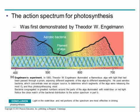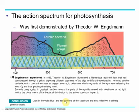The bacteria liked the oxygen being produced by the algae from photosynthesis. So where there's more oxygen, the bacteria grew better. The aerobic bacteria grew very well in some regions and very poorly in others. The violet-blue and the red portions of the spectrum were most effective at driving photosynthesis. This is one potential thing you could do as part of your photosynthesis lab.